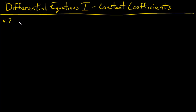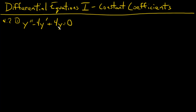That was from section 4.2, numbers 1 and 3. Number 1: we had y double prime minus 4y prime plus 4y equals 0. We were given that one of the solutions, y sub 1, is equal to e to the 2x. Now we're going to use the reduction of order method in order to find y2.